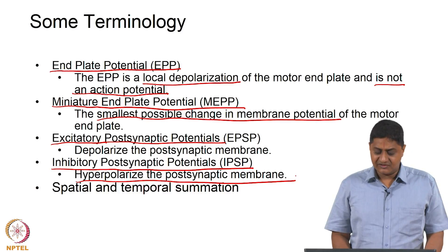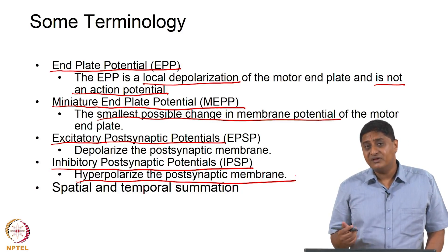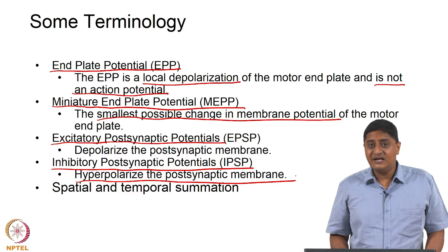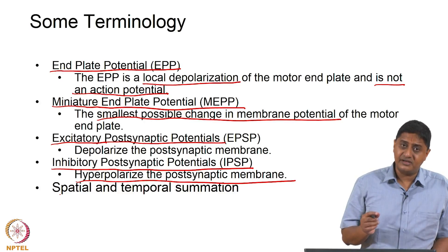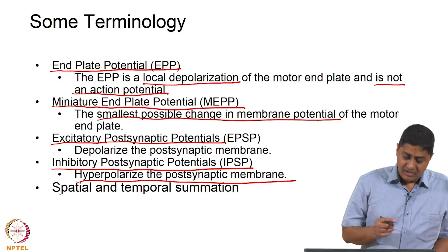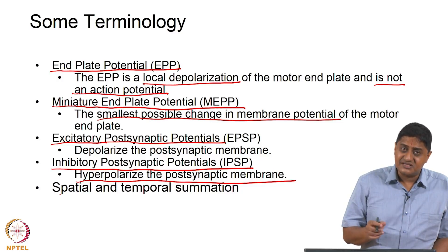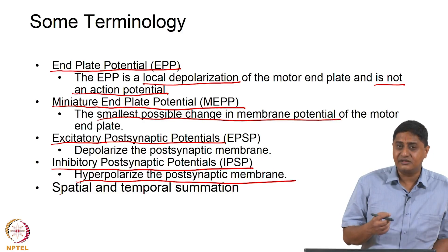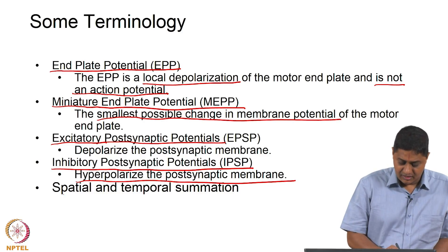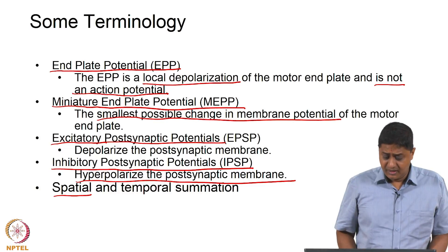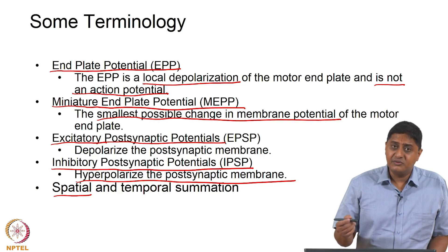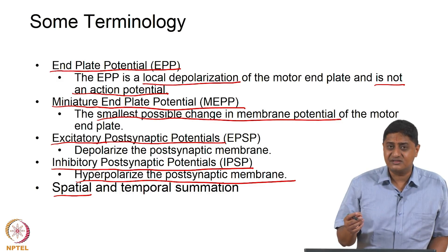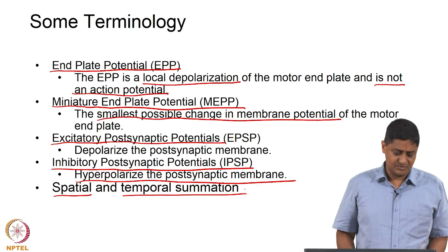We also saw what spatial and temporal summation are. If at a particular point in time multiple inputs arrive from several points in space, and that information is summed or integrated to produce an action potential or cause some outcome, that is called spatial summation. If at the same point in space multiple inputs arrive relatively close in time, it is possible for the inputs to be summed one after the other — this is called temporal summation, as seen in previous classes.